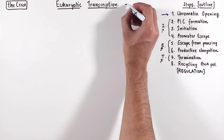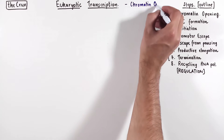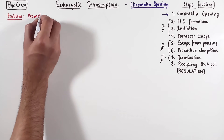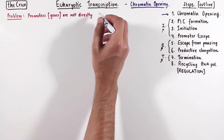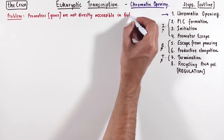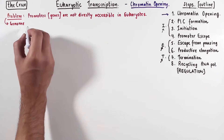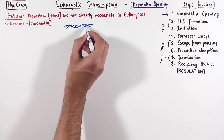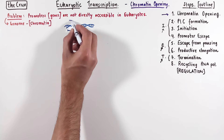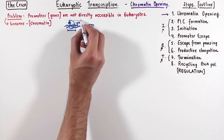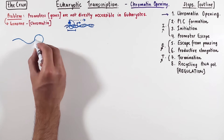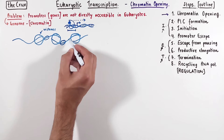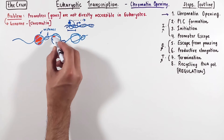In this video, we begin with square one, which is the issue of chromatin opening. Speaking explicitly, the problem is that the promoters, or genes for that matter, are not directly accessible in eukaryotes, because their genome is organized into chromatin. In prokaryotes, the genome is relatively free of blocking proteins, so at the promoters the RNA polymerase holoenzyme can bind and transcribe the genes. In eukaryotes, the DNA is wrapped around histone molecules, which are large bulky proteins that prevent the transcription factors and polymerase from accessing the promoters.